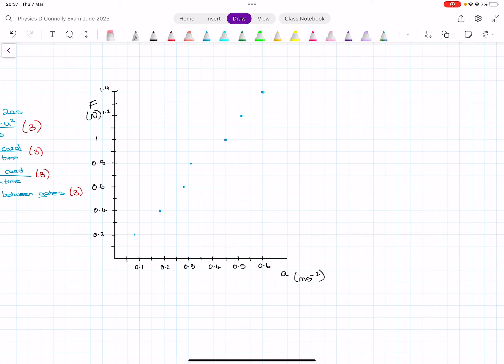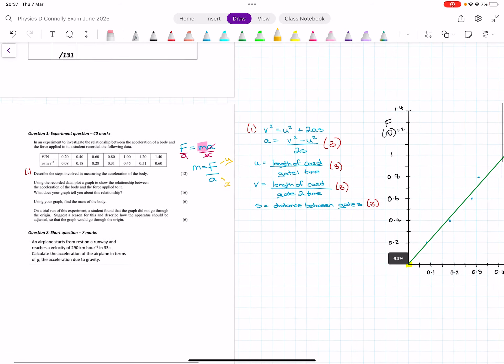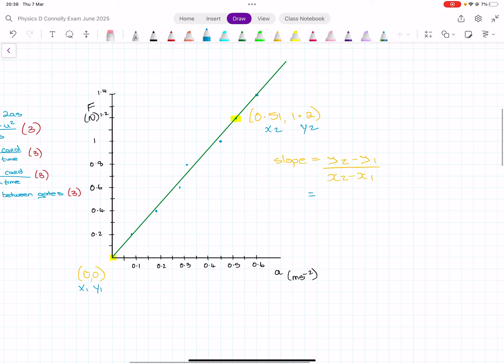So, we'll get our line. I'm going to hit the origin here. And I'm going to try and get best fit. So, I can use the origin and that point on the line. The second last one is 0.51, 1.2. And then down here we have 0, 0. The slope is y2 minus y1 over x2 minus x1, which is 1.2 minus 0 over 0.51 minus 0, which is 1.2 divided by 0.51 is 2.35.